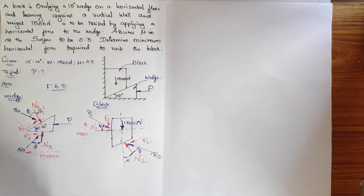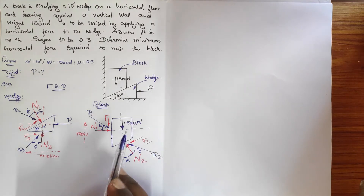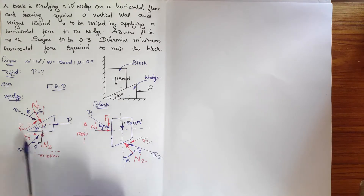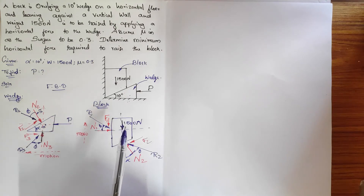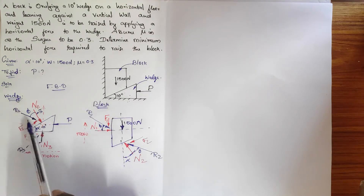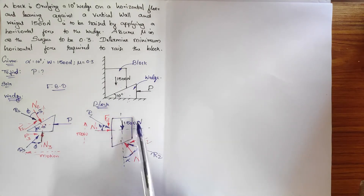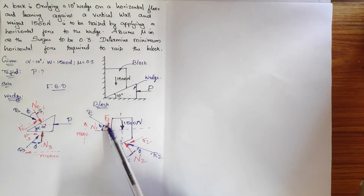To decide which body to analyze first — wedge or block — always start with the one that has the minimum number of unknowns. The wedge has three unknowns: R2, R3, and P. The block has only two unknowns: R1 and R2, since the self-weight is known. So we start with the block first.